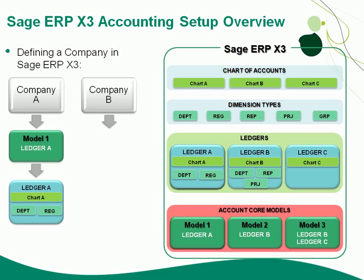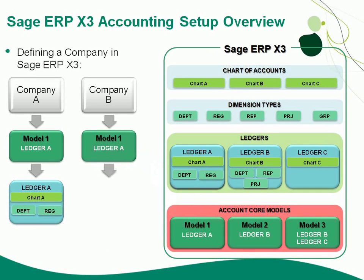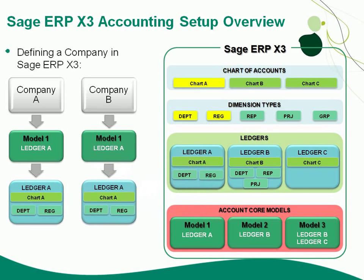The setup of X3 is very flexible in the sense that if I have multiple companies, I don't need to set up different charts of accounts. I could have a standardized chart of accounts used for each company. For company B, I'm also using account core model 1 with ledger A and chart of accounts A — so both company A and company B use the same chart of accounts, while tracking transactions separately for each company.